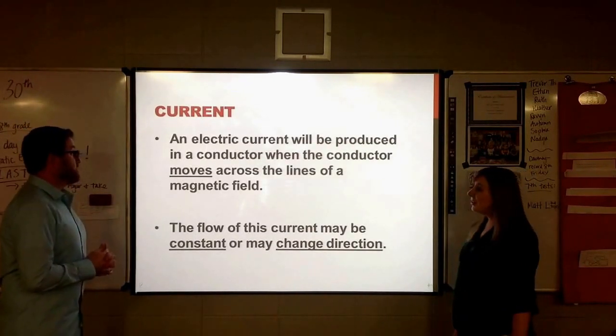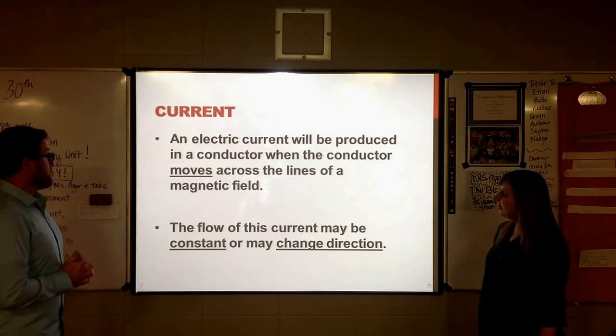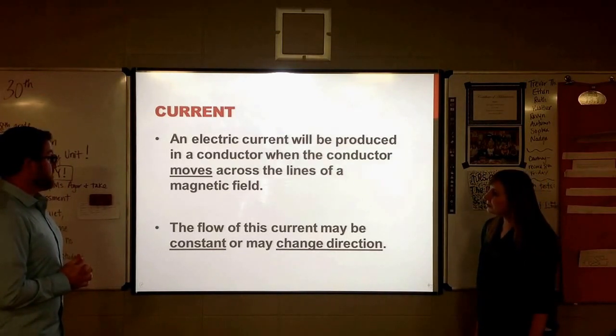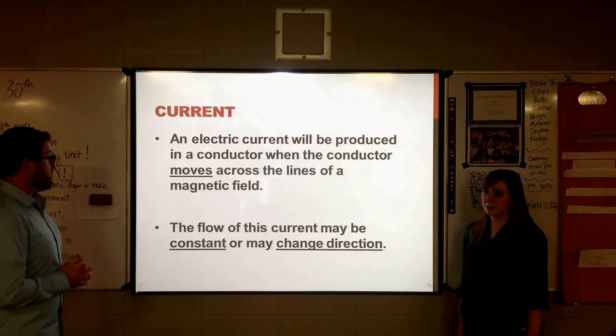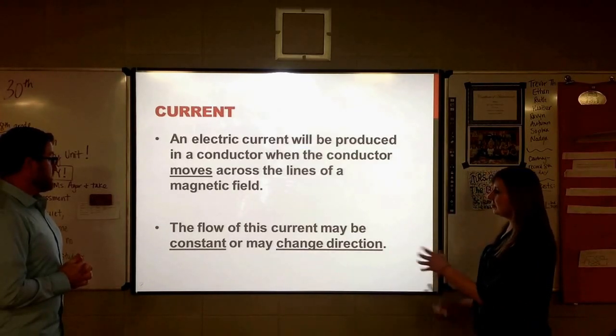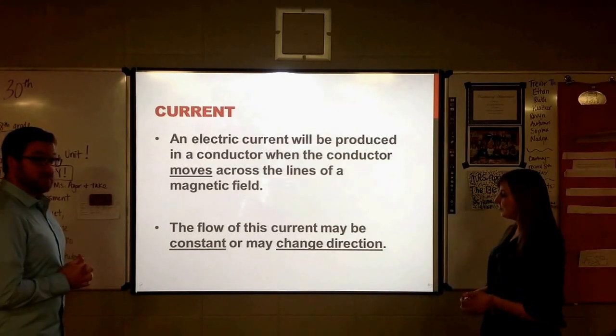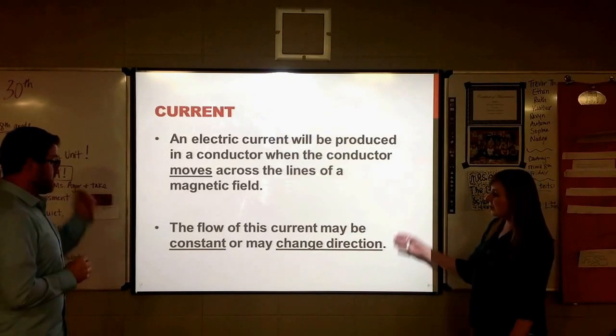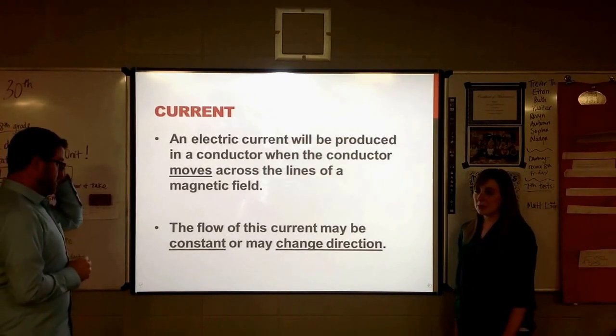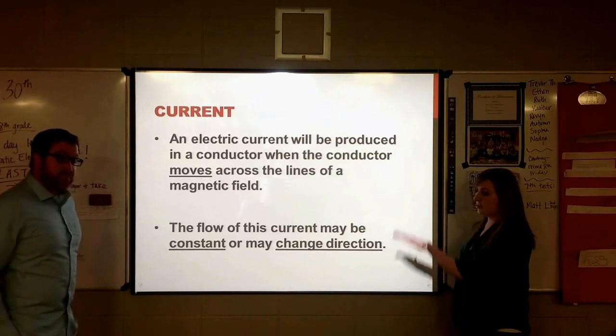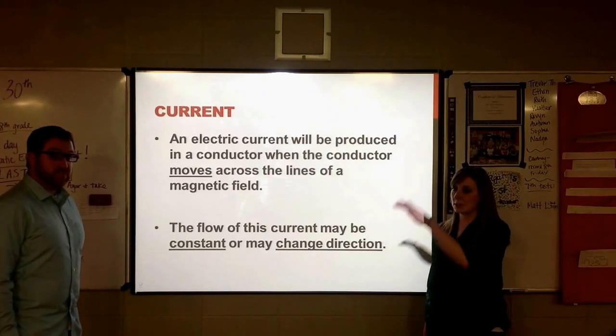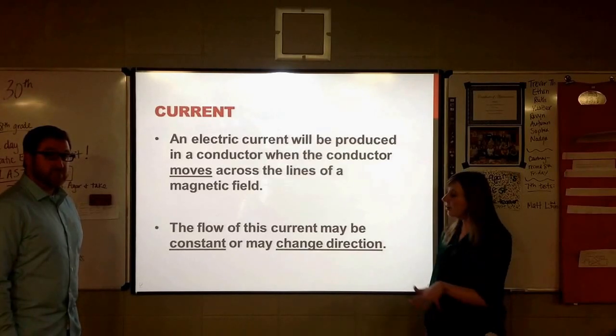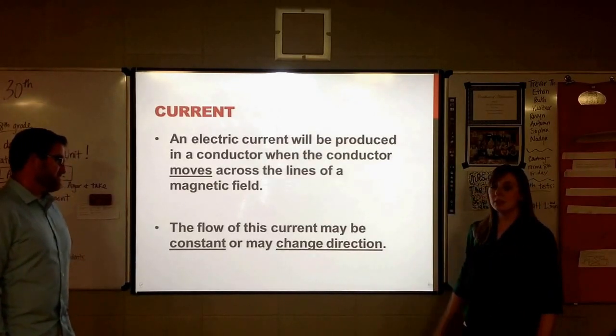All right, talking about current kind of in general, an electric current will be produced in a conductor when the conductor moves across the lines of a magnetic field. So, it's kind of exactly what Mr. B was just describing. The flow of that current can either be constant, just moving. If you think about the electric currents that we've seen in our circuits just kind of flowing in one direction, or they can change direction.